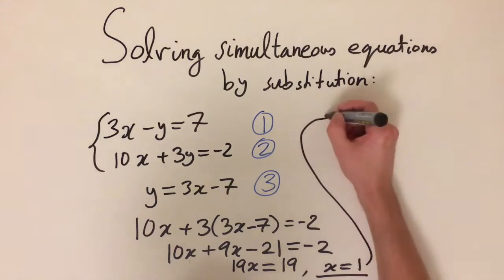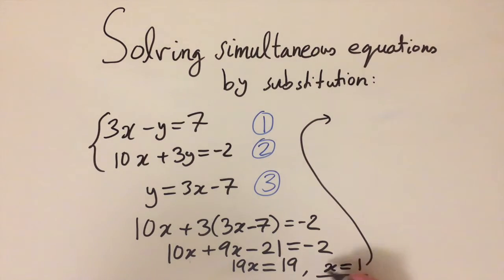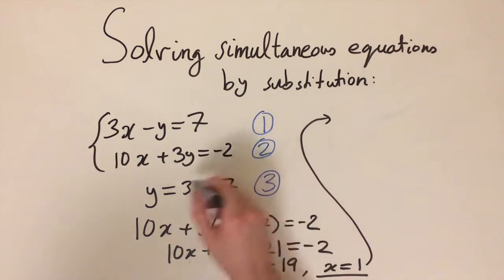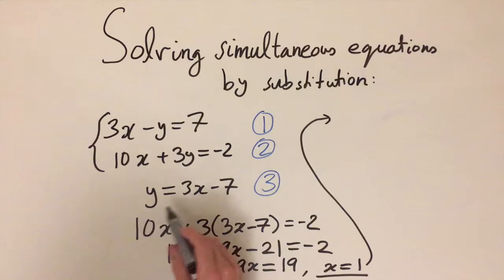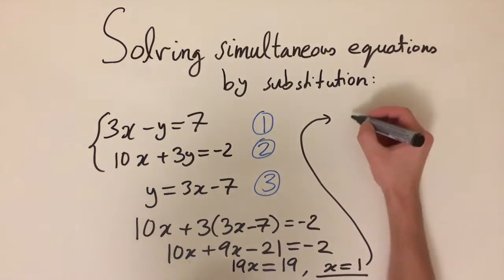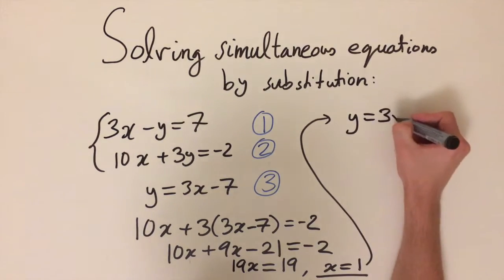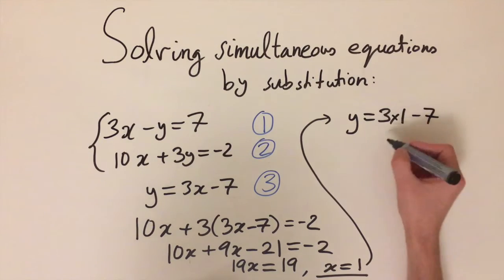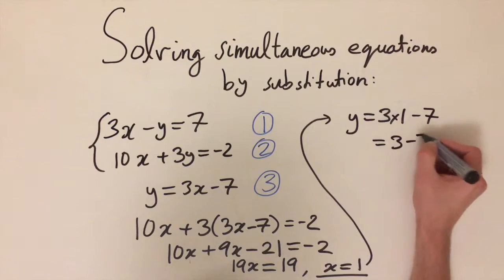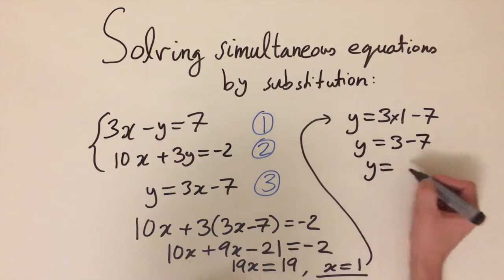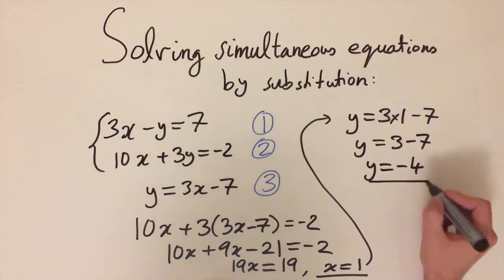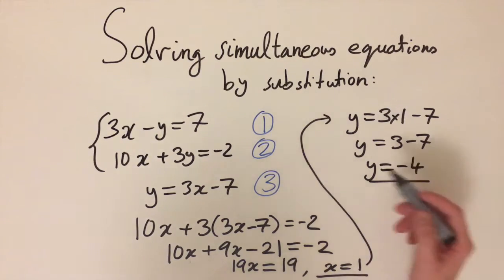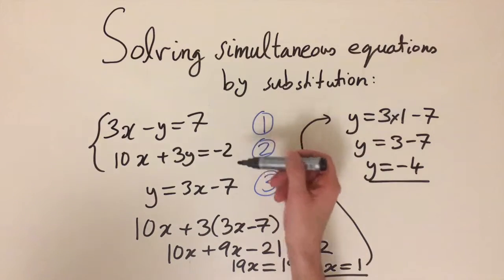Let's go back up here. The second stage is to substitute this value of x back into any of these equations, and let's do it into equation number 3. This is the simplest form we've expressed y in, so we get y equals 3x. X is just 1, so 3 times 1 minus 7, and 3 times 1 is 3, so y equals 3 minus 7, which equals minus 4. So x equals 1 and y equals minus 4 is the solution of this pair of linear equations.